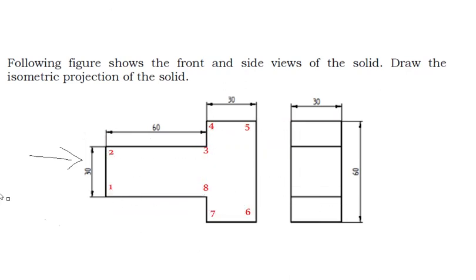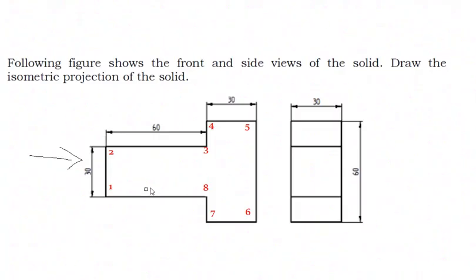Now we shall draw. Point 1 to 2 is 30mm — that means we can count three boxes, and that is a vertical edge. From here I'll count 10, 20, 30. Then from 2 to 3 it is a horizontal line, so this should be inclined to 30 degrees and this length is 60mm — that means six boxes.